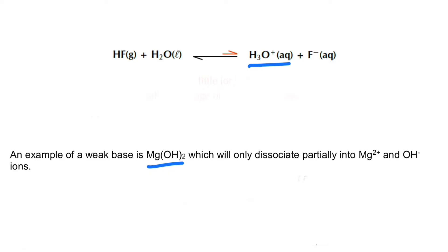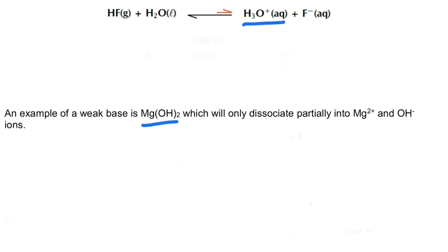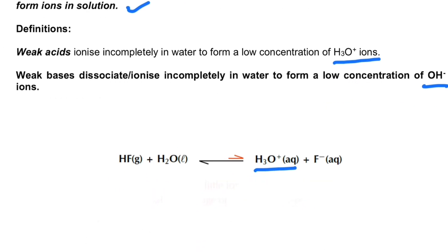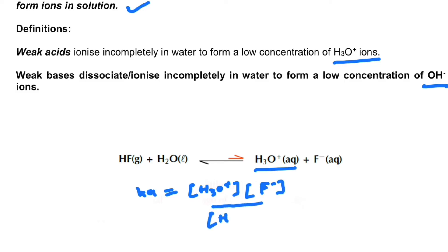The Ka value is derived from chemical equilibrium. Ka always takes the products if they are aqueous or gases — no liquids or solids. So Ka in this case is the concentration of H₃O⁺ multiplied by the concentration of F⁻, divided by the concentration of HF. We don't include H₂O because it is liquid; in these expressions we only consider gases and aqueous solutions.